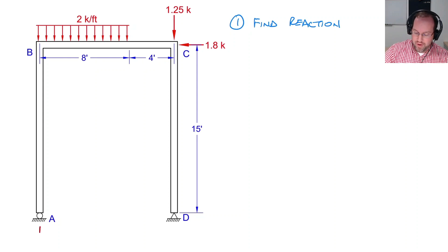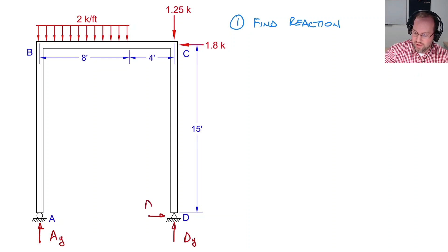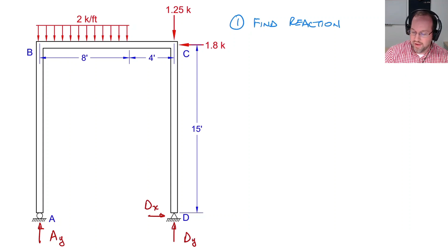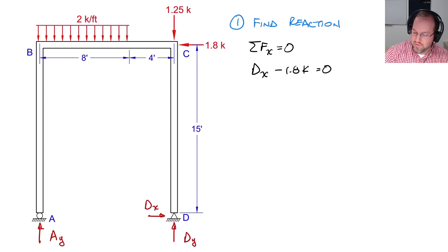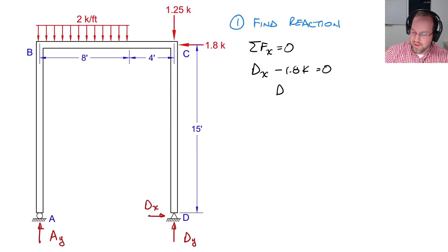For this problem we have three reactions. We have a force here at A in the y direction, and we'll have two forces at the pin: D in the y direction and D in the x direction. Starting with the sum of forces in the x direction equal to zero, D_x minus 1.8 kips equals zero, so D_x equals 1.8 kips.